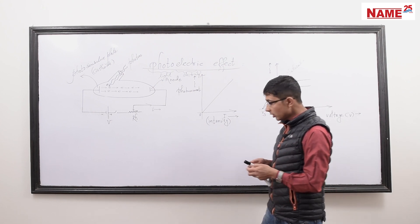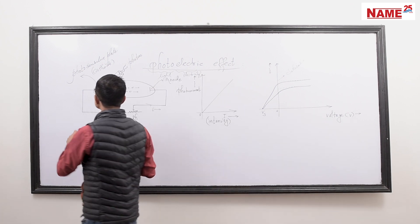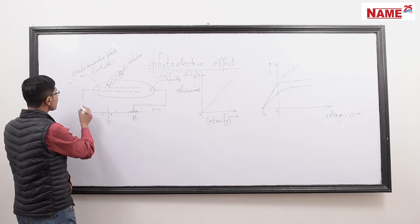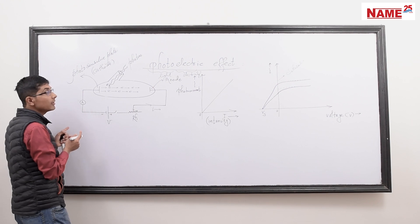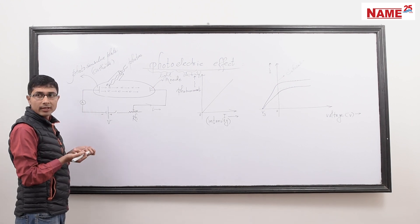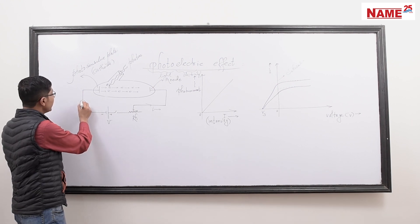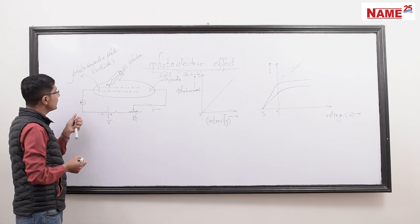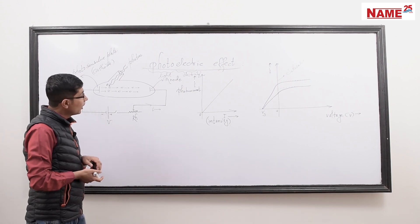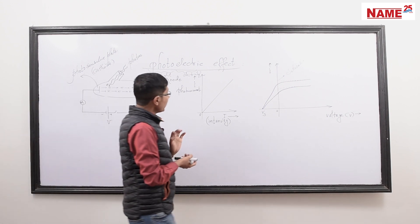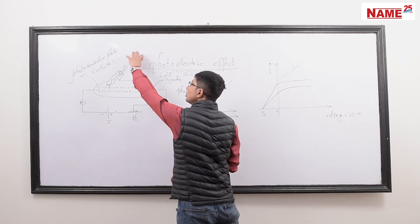But how much photocurrent is there? We can measure this using a milliammeter. If the photoelectric current is low, it will be in the milliammeter range, so this tells us how many photons are producing electrons.